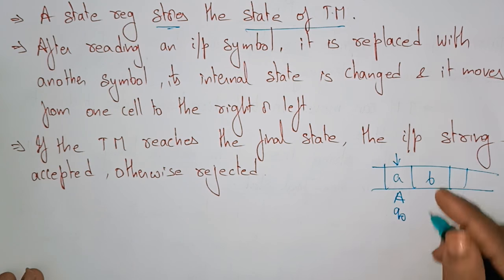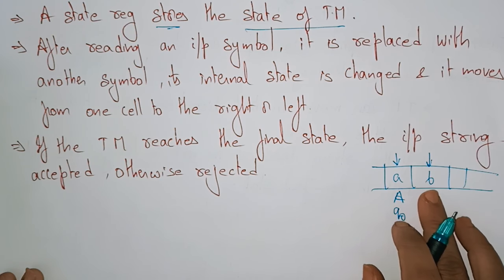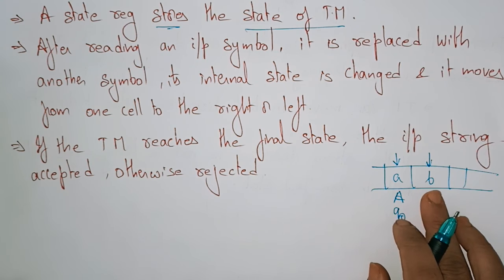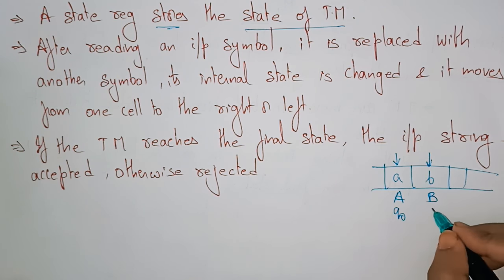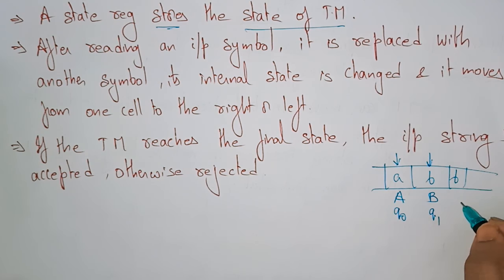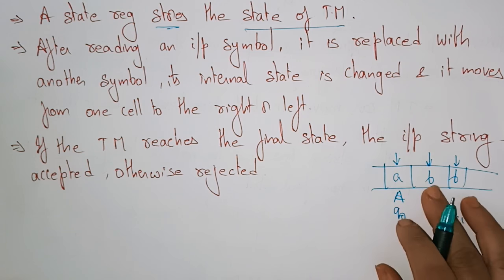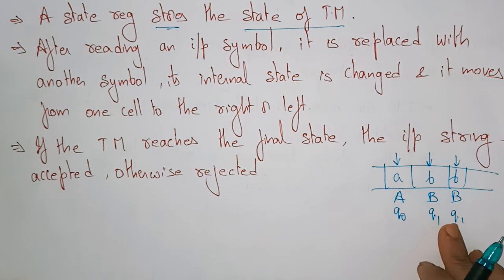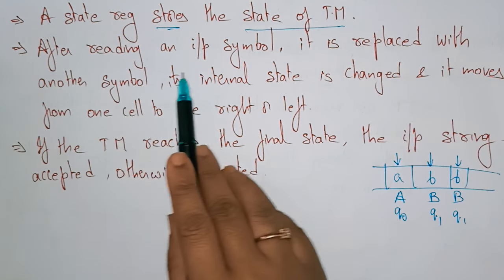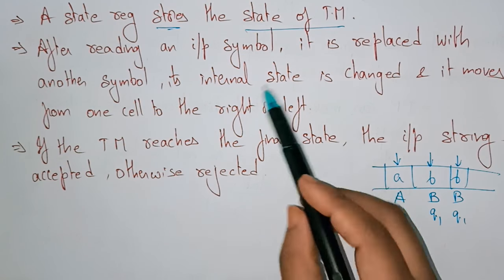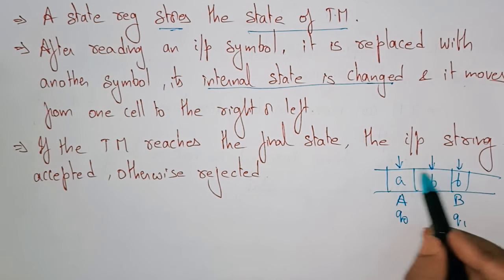For example, suppose the current state is Q0 and we move to the next cell with a new input symbol B — here it will be replaced with another symbol and the state will change to Q1. Suppose there is also a B in the next cell; then the state remains the same — the state will not change for the same element. After reading each input symbol, it is replaced with another symbol and the internal state is changed, moving from one cell to the right or left.